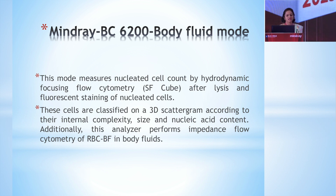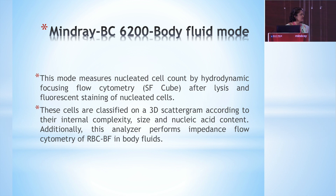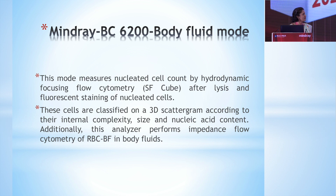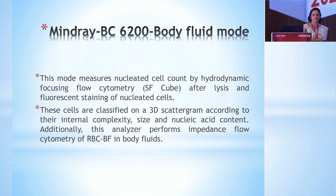These cells are classified on a 3D scatter plot according to their internal complexity, size, and nucleic acid content. Additionally, the analyzer also performs impedance flow cytometry for the RBC count in body fluids.